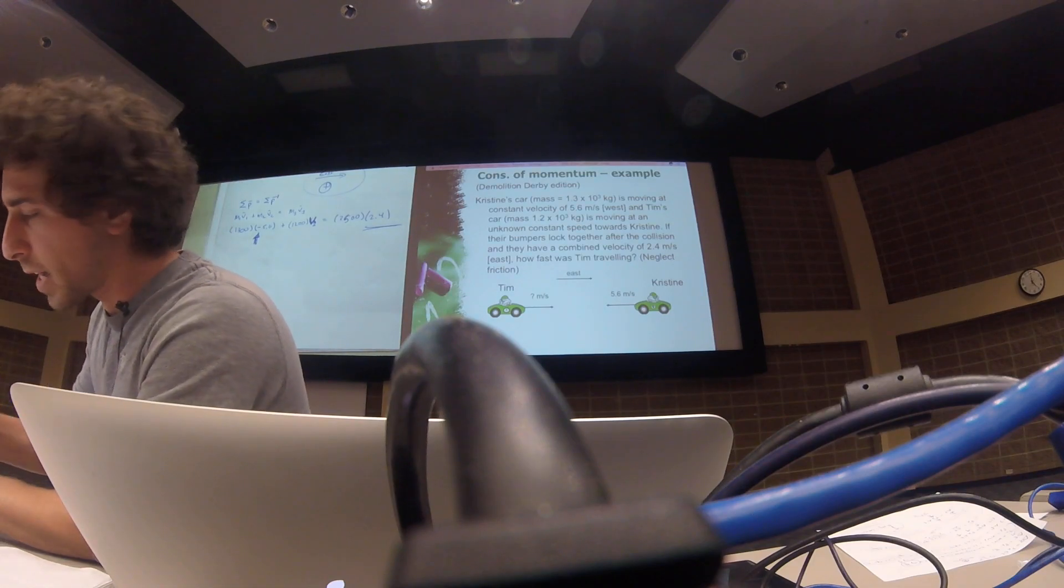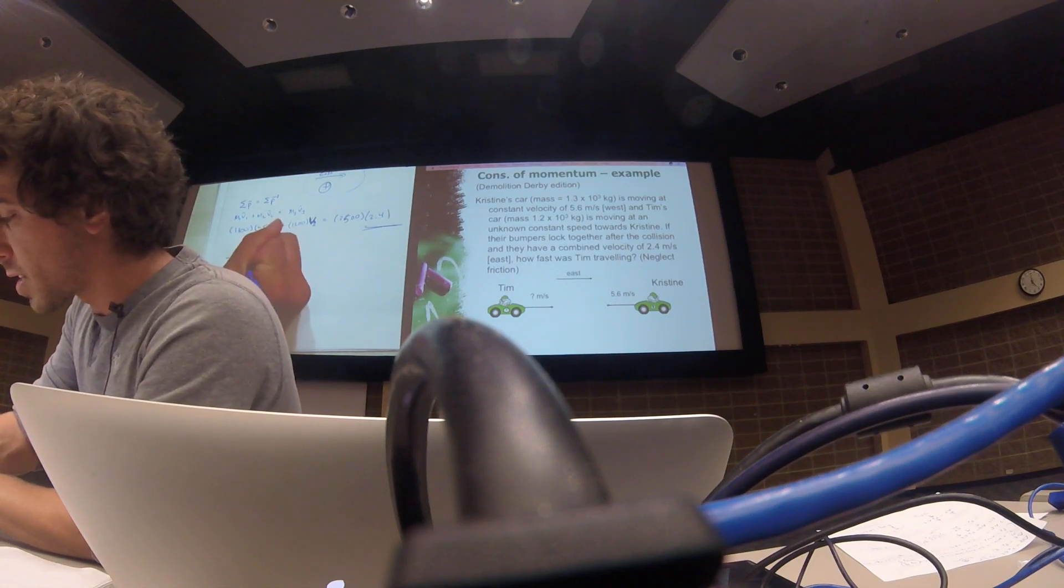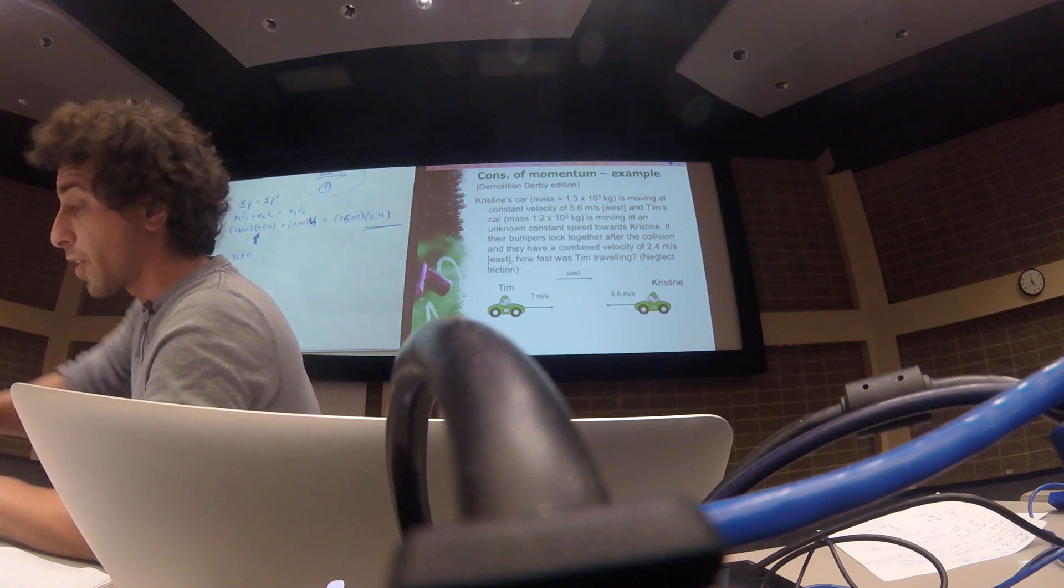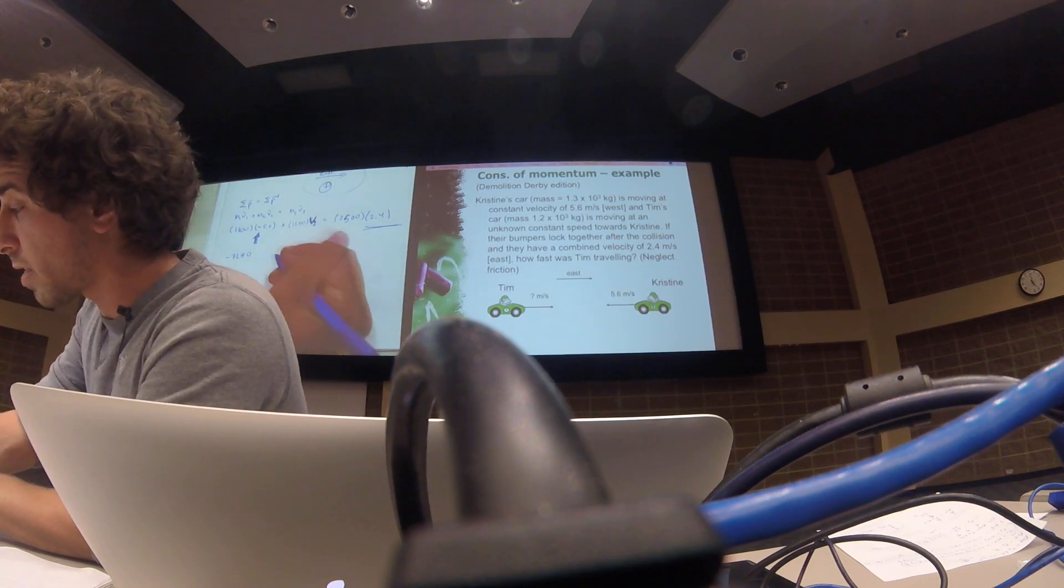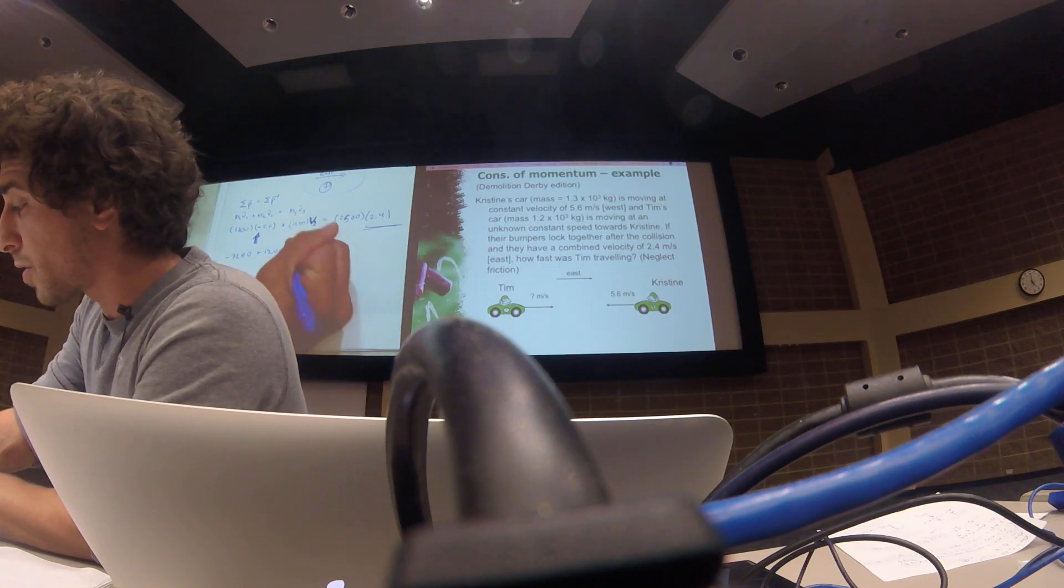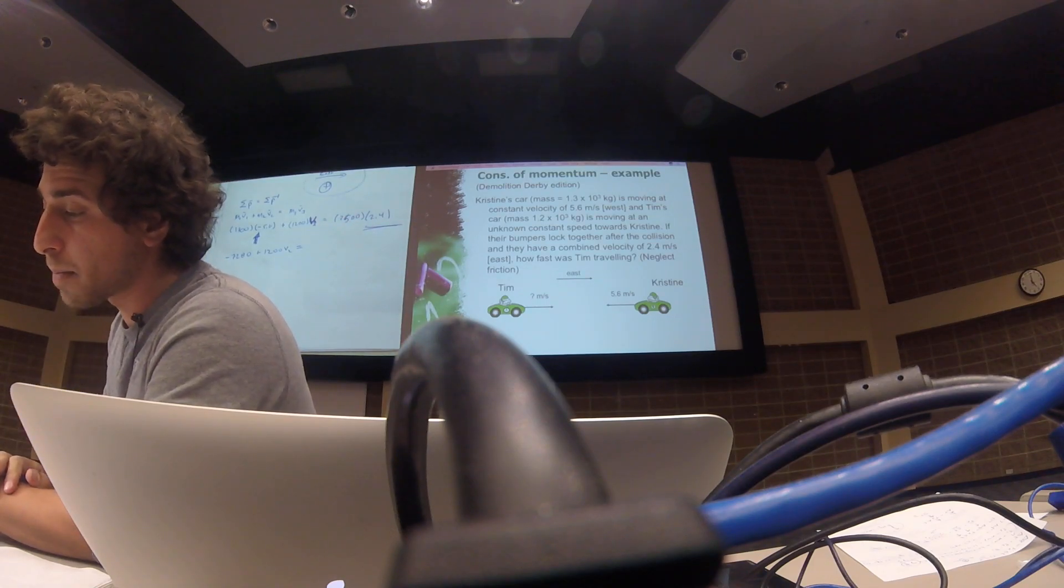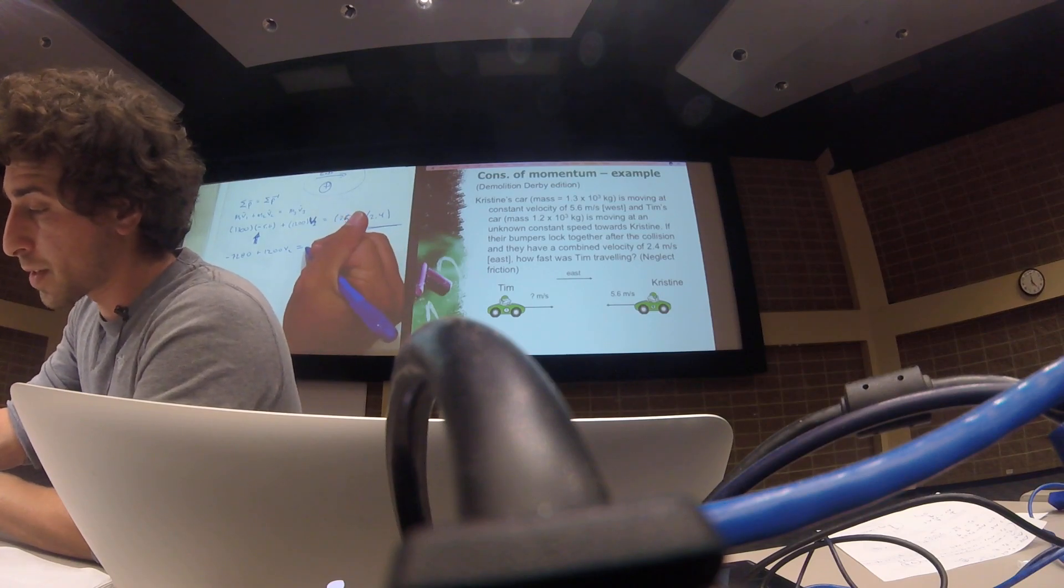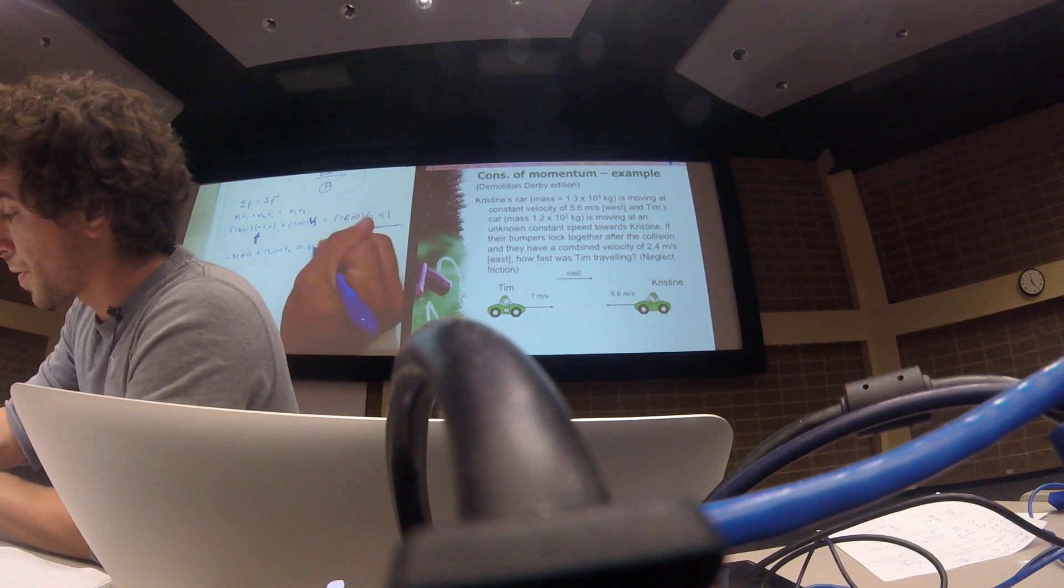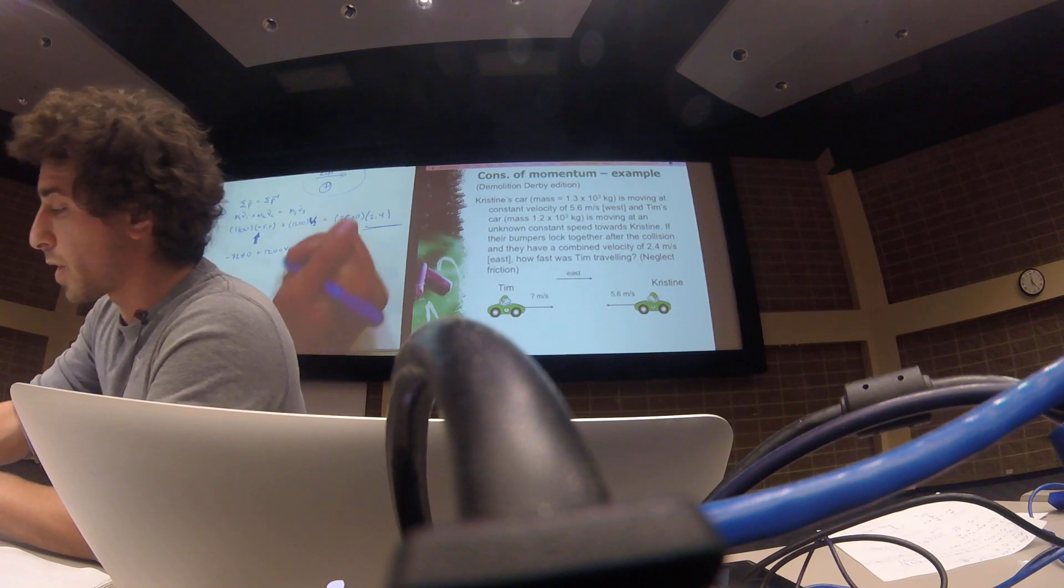1,300 times minus 5.6 is minus 7,280. Don't forget that minus when you work that through. Plus 1,200 V2 equals 2,500 times 2.4 which is 6,000. And we're solving for V2.